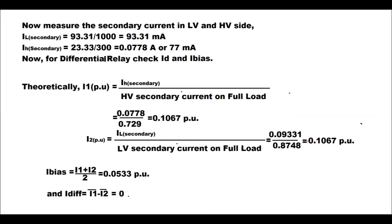Now measure the secondary currents on the LV and HV sides. The LV secondary current = 93.31 / 1000 (since CT ratio on LV side is 1000/1) = 93.31 milliamperes. The HV secondary current = 23.33 / 300 (since CT ratio for HV side is 300/1) = 0.0778 amperes, or 77 milliamperes.